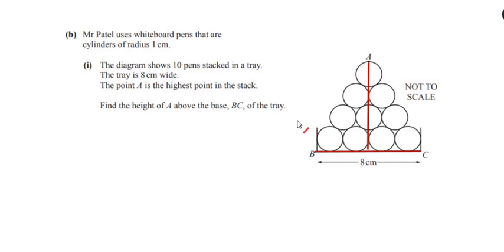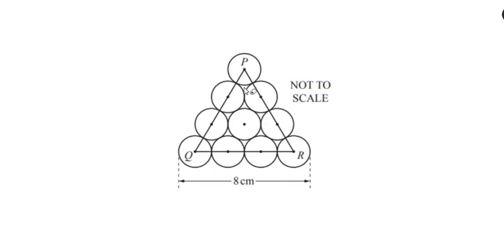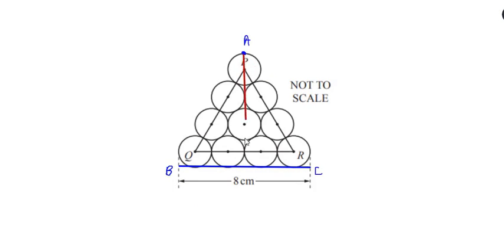This diagram is the same as the previous diagram given in part A. The only difference is that the highest point is labeled A, and the base is labeled BC. So we have to find the height from point A to BC. In part A we found the height of the triangle to be 5.2 centimeters.